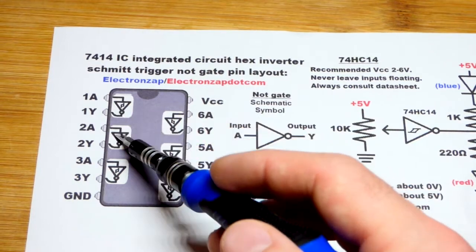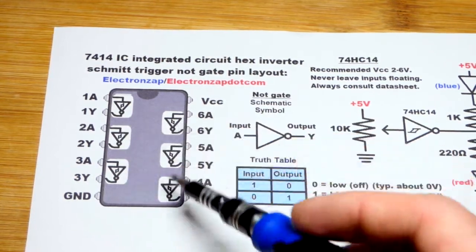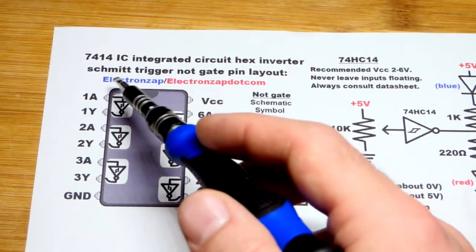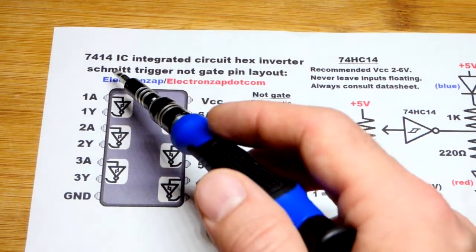It's a hex inverter - there are six integrated circuits in there. They are basically NOT gates, but more descriptively they are Schmidt trigger inverters.